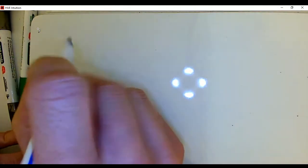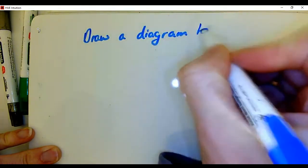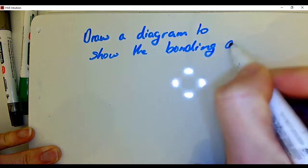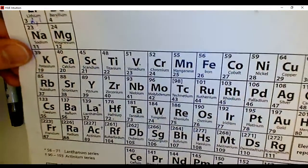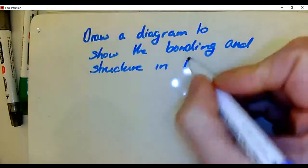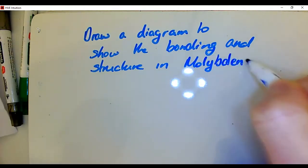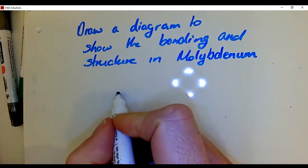Let's see if you can apply the diagram in your notes to a diagram of a particular metal. Draw a diagram to show the bonding and structure in a particular metal - and I'm just going to pick any metal because frankly they're all going to be the same. Let's choose something a bit unusual - molybdenum.